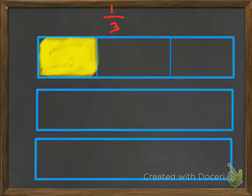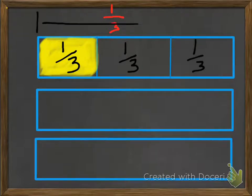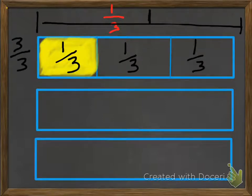Let's take a look at this. We have three wholes here. The first one is divided into three parts — each part is one third. So the whole is three over three, which equals one whole. The part that's shaded is one third of the whole.